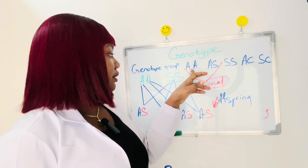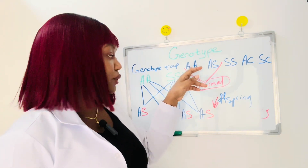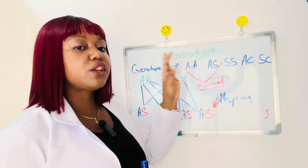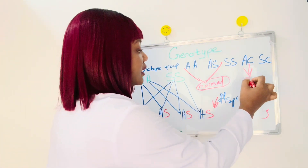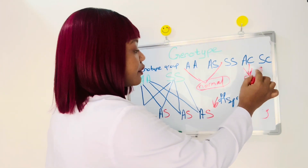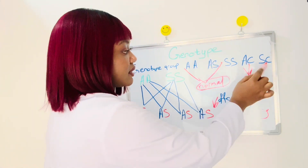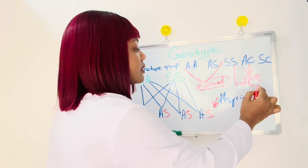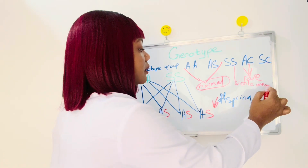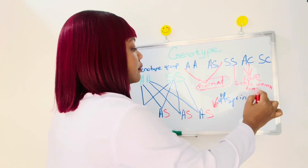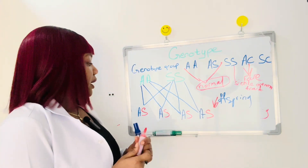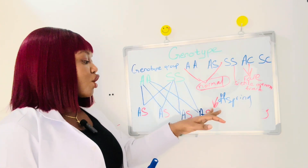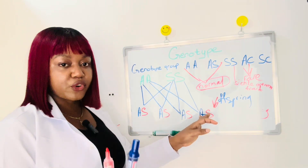Someone with the AA genotype group has no sickle cell — they are normal. Someone with AS only has a single trait, so they are equally normal. And so in this situation, a normal individual getting married to a sickle cell patient means all of their offspring are going to have the sickle cell trait in them.